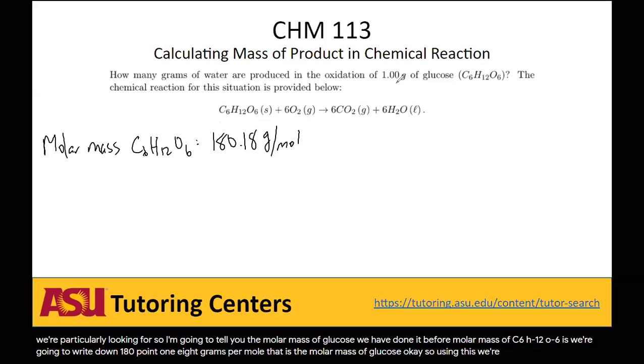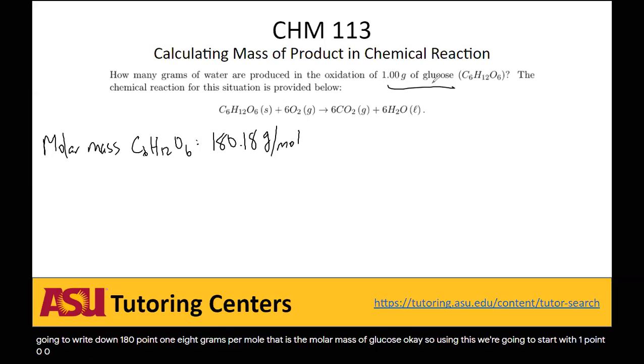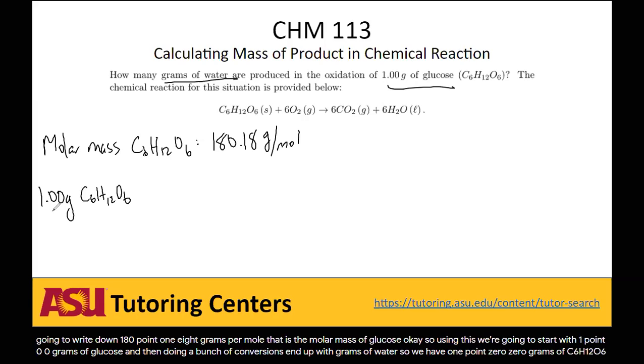So using this, we're going to start with 1.00 grams of glucose, and then doing a bunch of conversions, end up with grams of water. So we have 1.00 grams of C6H12O6. Let's start the conversion process.